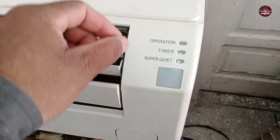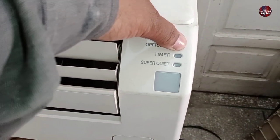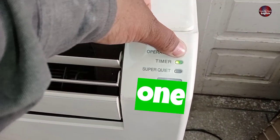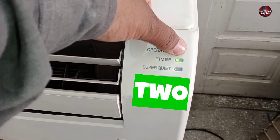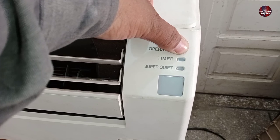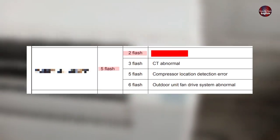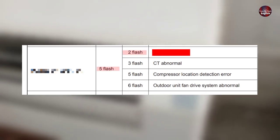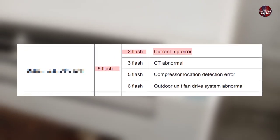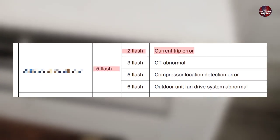Now let's check the timer light blinking: 1, 2 times. The combination of the error is 5 and 2. This is a current trip error.